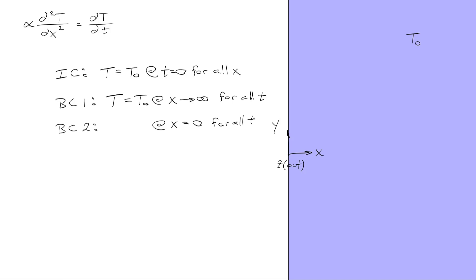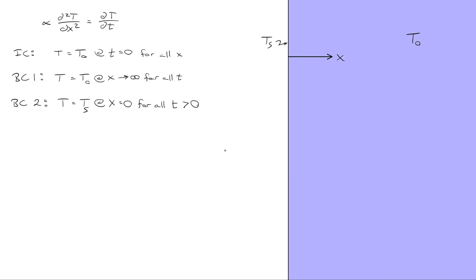In this case, let's start with the simplest case in which we're fixing the temperature. We're going to say that T equals Ts, some constant temperature at x equals zero. To solve this partial differential equation subject to the initial condition and two boundary conditions, we can use what's known as a similarity variable to arrive at an expression for the temperature as a function of x and time.